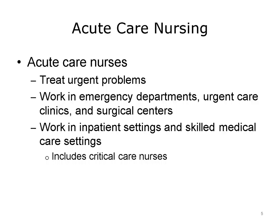Acute care nurses care for patients whose problems are not life-threatening, but require skilled medical care in the inpatient setting. Critical care nurses, on the other hand, care for patients with ongoing life-threatening problems, often in hospital settings such as intensive care units, where they provide highly skilled nursing care. Larger health care organizations may have specialty intensive care units, such as cardiac intensive care, medical intensive care, or surgical intensive care units.